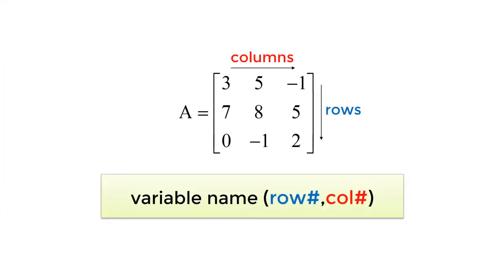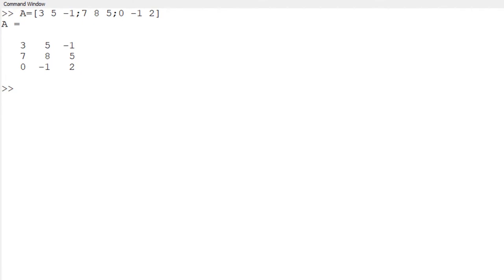To access the element in the matrix, you can use a parenthesis with a row and a column number with a comma as a separator. To access the element in the second row and third column, you can type A parenthesis with 2, 3. You can see 5.